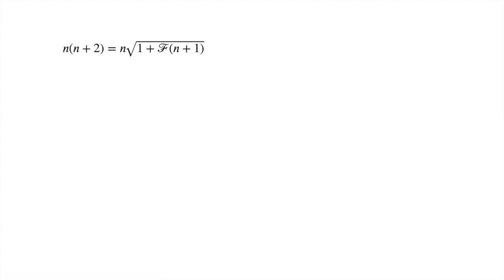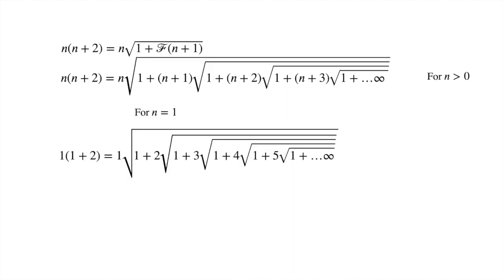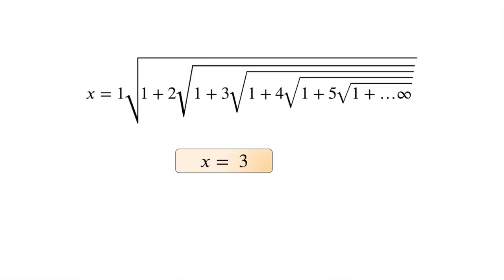Now writing back n times one times one plus f of n plus one to our original general statement, and now putting n as one, our answer for the actual question comes out to be three.